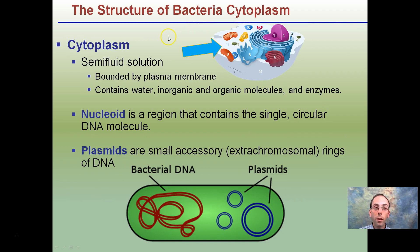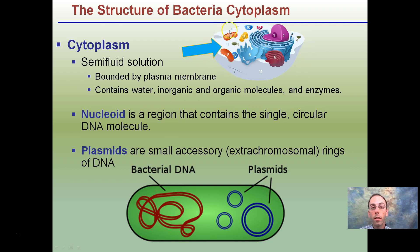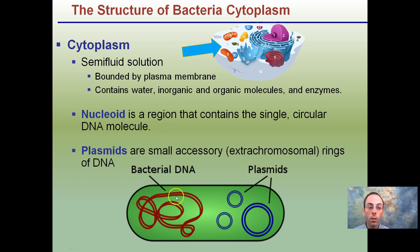Certain structures of the cytoplasm: the cytoplasm is a semi-fluid solution inside the plasma membrane containing water, inorganic and organic molecules, and enzymes. The nucleoid in prokaryotes is a region that contains a single circular DNA molecule — it's kind of folded on itself, so it's not a perfect circle, but if unfolded it is circular — unlike the chromosomes found in eukaryotic cells.